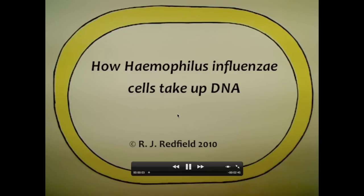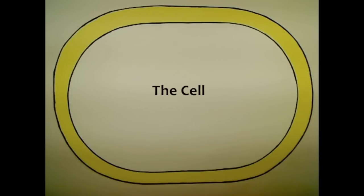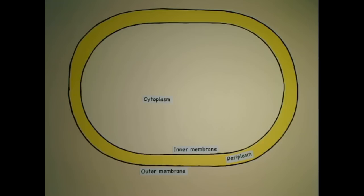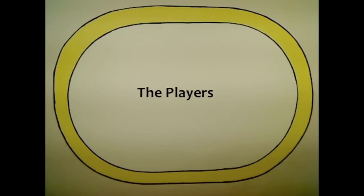This is a video illustrating how Haemophilus influenzae cells take up DNA. We start with this cell, a typical gram-negative cell with an inner and outer membrane.